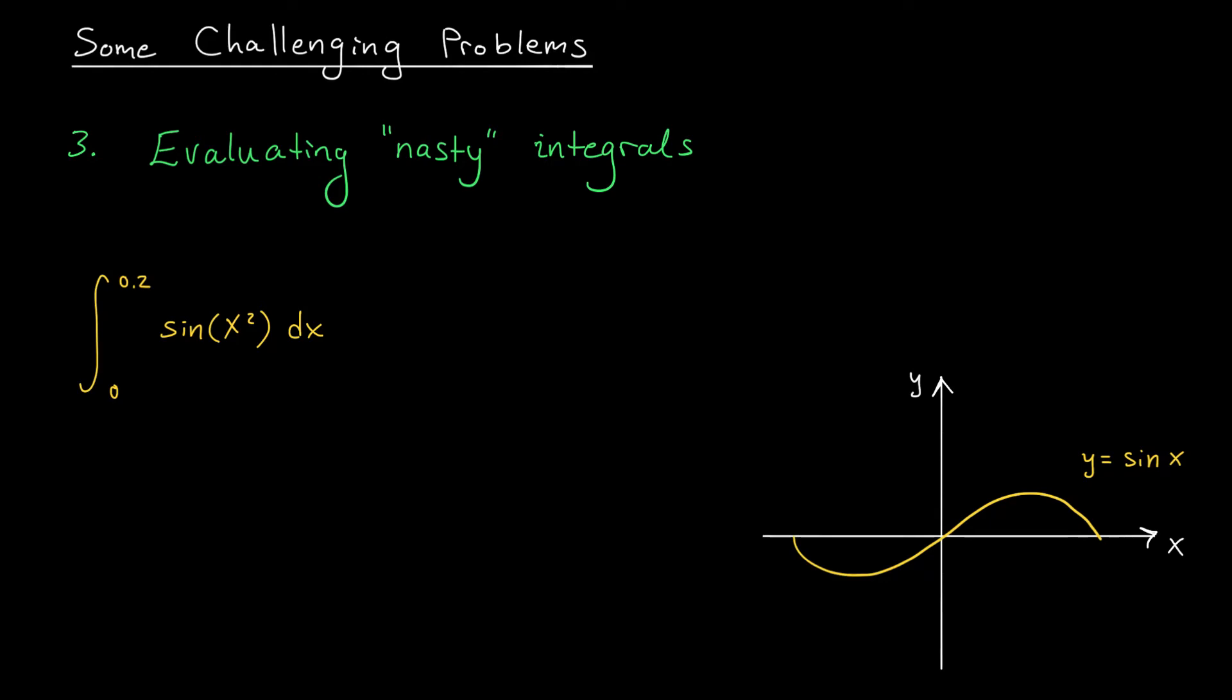The last problem that I'll mention in this video is something that we all know quite well, the problem of evaluating nasty integrals. Here's an example that I took from the course notes, because it really is a great example. Suppose that I ask you to find the integral from 0 to 0.2 of the function sine of x squared dx. Well, the first step would normally be to find an antiderivative of this function. But as you may know from Math 117, this function doesn't have a nice elementary antiderivative. If you can't find an antiderivative, how are you supposed to evaluate this integral?